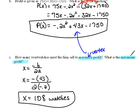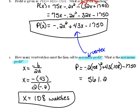Now we need to know what is the maximum profit. Well we know that the profit equals negative 0.2 times x, which we are going to use 108 squared, plus 43 times, instead of x we're using 108, minus 1750. And now when we simplify this, we can just use our calculator for that,